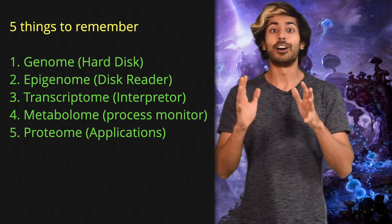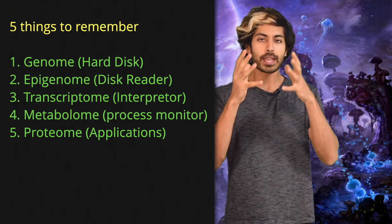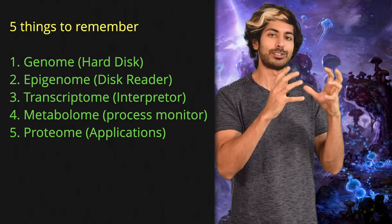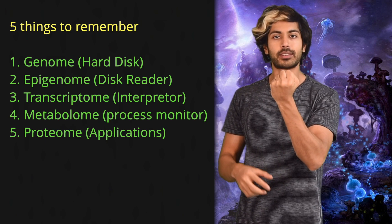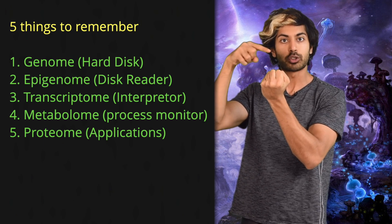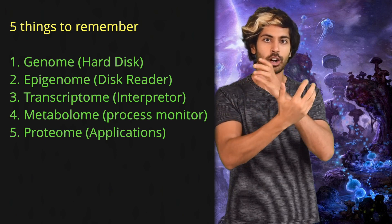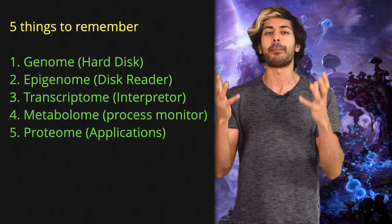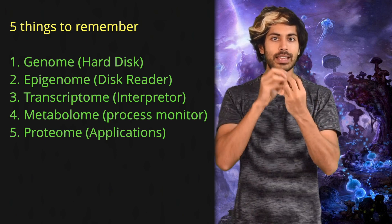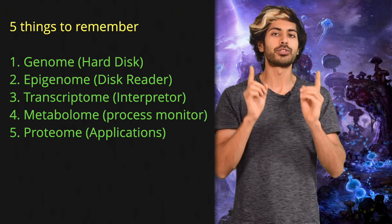That was a lot, but there are only five things to remember from this video. Looking at the molecular biology stack in computer science terms: the genome is the hard disk — it stores information. The epigenome is the disk reader. The transcriptome is the interpreter. The metabolome is the process monitor. And the proteome consists of all the applications. The more we integrate this data, the better we'll be able to make accurate predictions and someday reverse the aging process. Please subscribe for more programming videos. And for now, I've got to sequence my Siraj-ome — thanks for watching.